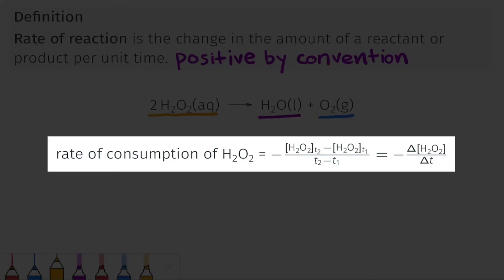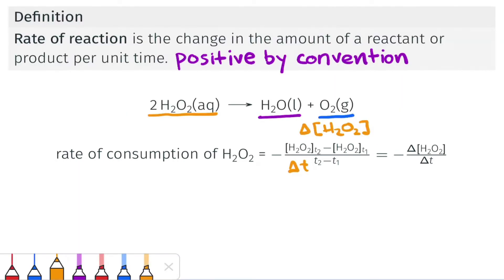For example, the rate of consumption between two time points, let's call them T2 and T1, is equal to the negative of the H2O2 concentration at T2 minus the H2O2 concentration at T1. This is a change in the concentration of the H2O2 between those two time points divided by T2 minus T1. And this is a change in time between the two time points. So rate is a change in concentration divided by a change in time.